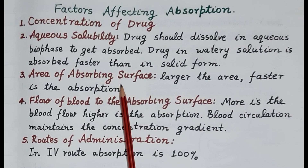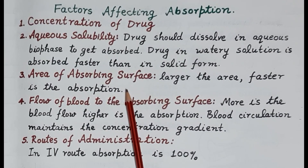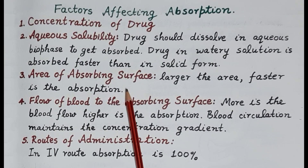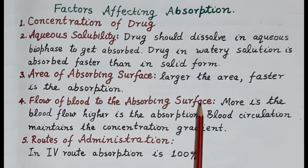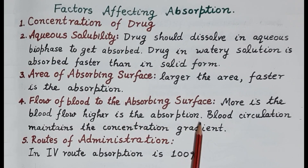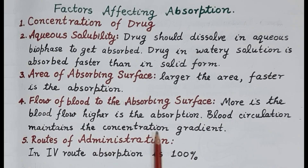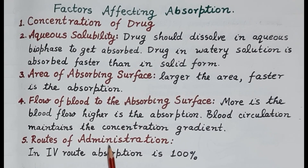Third is the area of absorbing surface: larger surface area means faster absorption. For example, absorption is faster from the small intestine because of its larger surface area compared to the stomach. Fourth is the flow of blood to the absorbing surface: greater blood flow means faster absorption. Initially, since there is no drug in the cells or tissues, blood circulation maintains the concentration gradient and speeds up absorption.